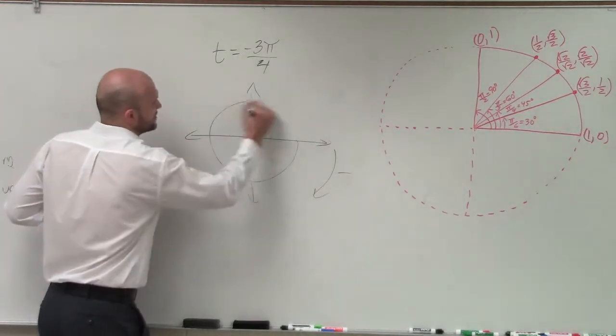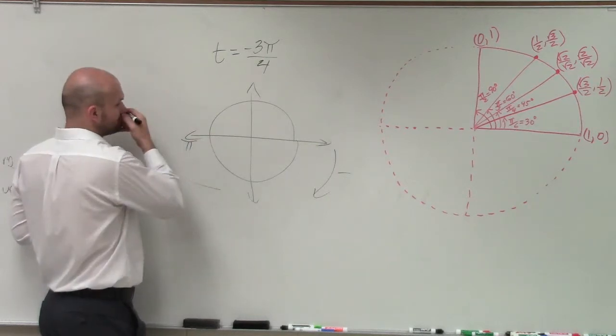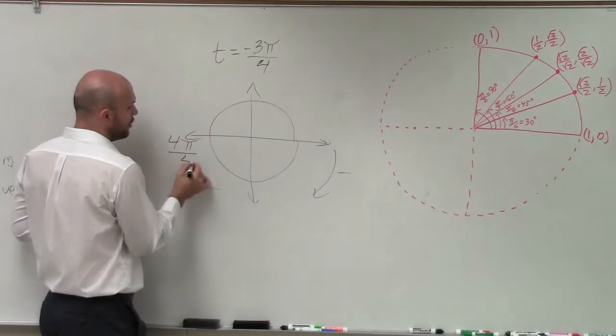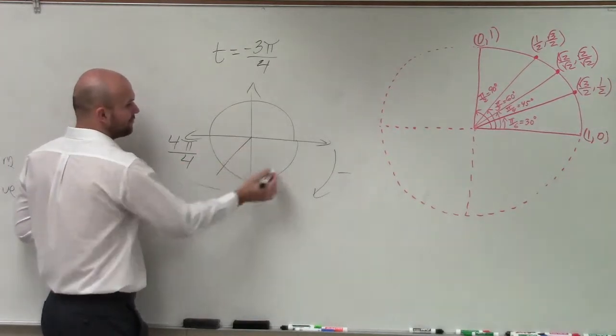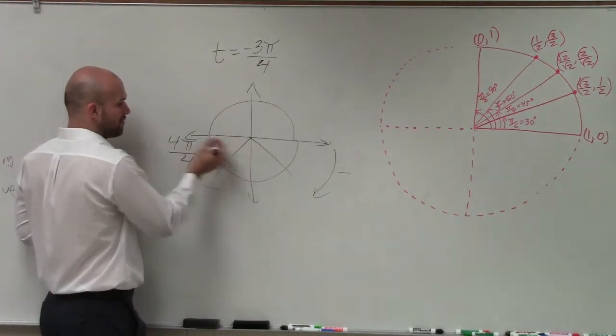So we know we're dealing with the unit circle. Halfway around the unit circle is π. But since we're breaking up into fourths, π is a whole, but we're going to break it up into four parts of the whole: one fourth, two fourths, three fourths, four fourths.